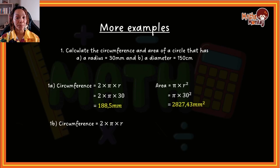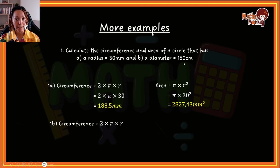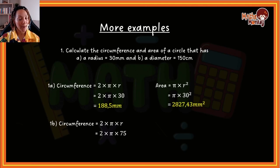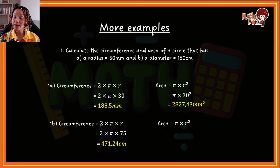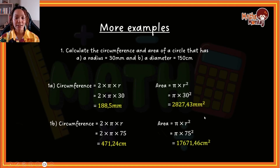Now let's look at the circumference and area for part b. The circumference formula is 2 multiplied by pi multiplied by radius, but the question gives us the diameter of 150. So we divide the diameter by 2 to get the radius: 150 divided by 2 is 75. So 2 multiplied by pi multiplied by 75 gives 471.24 centimeters. For the area of that same circle, pi times 75 squared gives 17,671.46 centimeters squared.